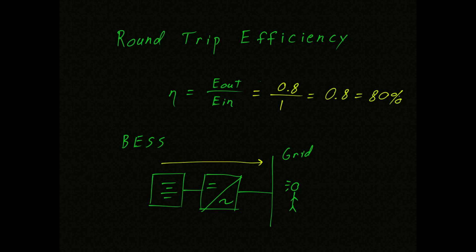In this particular case, we have at least two conversions. In the battery, there's electrical to chemical and chemical to electrical. And in the converter, when we convert AC to DC and DC to AC, again, there will be some losses.